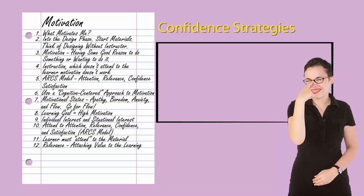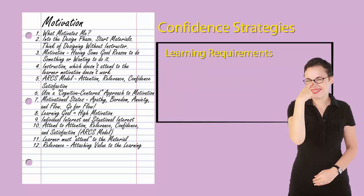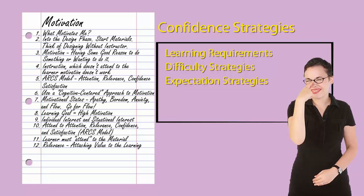Confidence in the instructional strategies around it tends to focus on the various aspects of learner performance in the learning process. Keller recognized five different strategies to consider when looking at confidence. First, learning requirements ensure that students clearly know what is being taught. Second, difficulty strategies can focus on sequencing the learning material and increasing difficulty. Third, expectation strategies are suggestions for helping students acquire realistic and positive outlooks when working with the instructional material. Fourth, attribution involves helping students to attribute their successes to their work. And fifth, self-confidence strategies include sample techniques to help students build self-confidence.